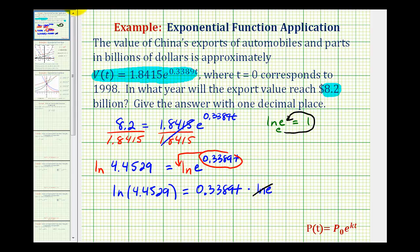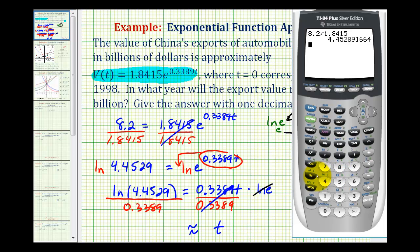And now to solve for t, we divide by this coefficient here, or 0.3389. Now we'll go back to the calculator, but the directions do say round to one decimal place. So we have natural log 4.4529, closed parenthesis, divided by our decimal, 0.3389. So t is approximately 4.4.